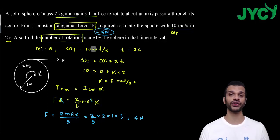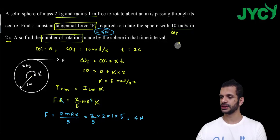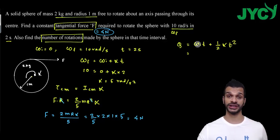Now my second question: find the number of rotations made by the sphere. It is very easy. Number of rotations, what I need to do first is angle rotated, which is theta. Theta is equal to omega initial t plus half alpha t square, right? Angular velocity initial is 0, alpha is 5, and time is 2.